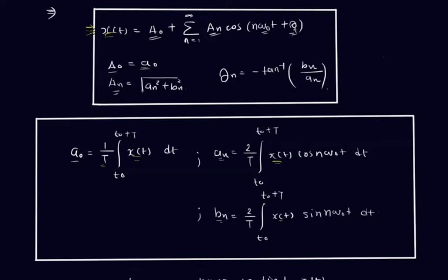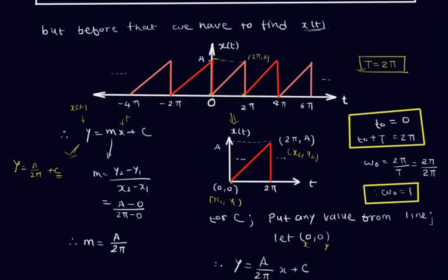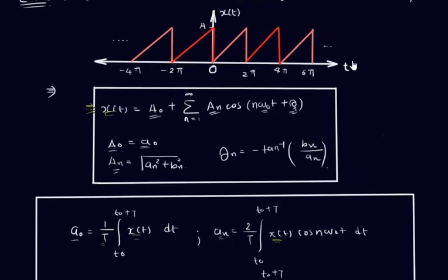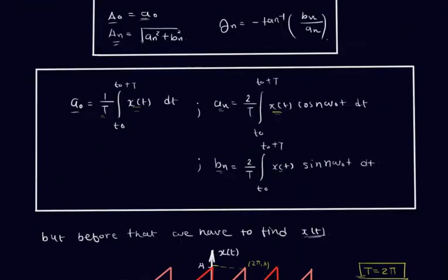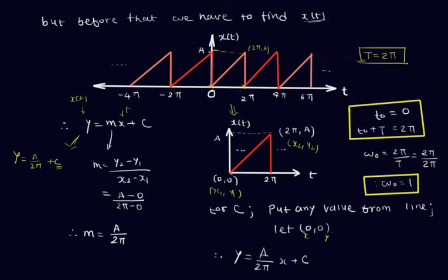Considering the graph given in the question, we can see that our function x(T) starts at the location of 0 and repeats itself after a fixed interval of time, that is 2π. So the time period T of this sawtooth wave is equal to 2π.